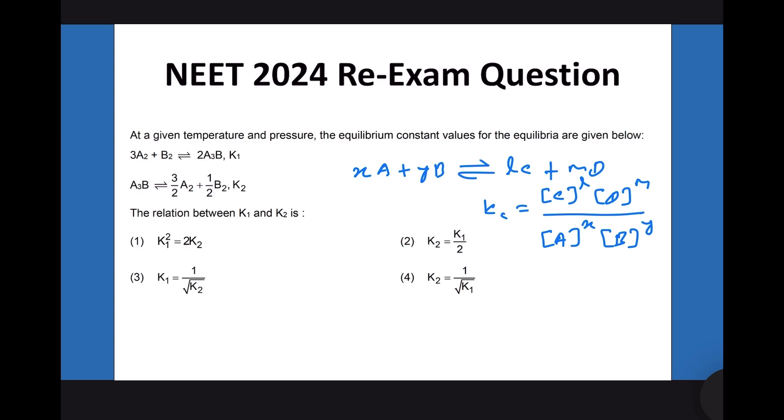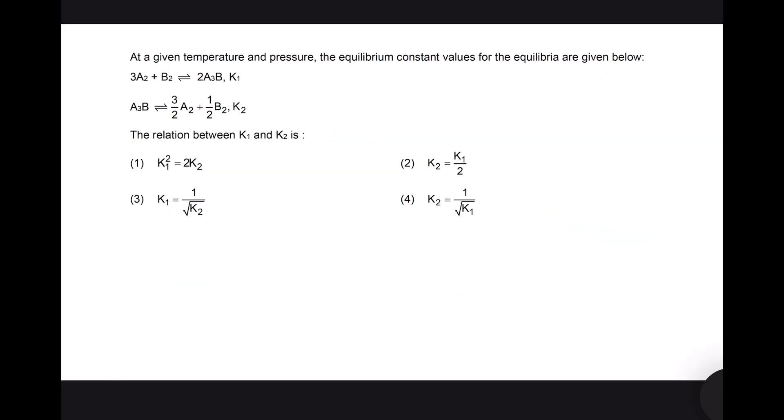If we do so, then k1 will be the product concentration of a3b to the power 2 divided by concentration of a2 to the power 3, concentration of b2.